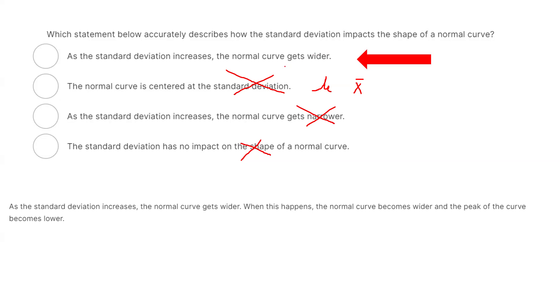As the standard deviation increases, the normal curve gets wider. When this happens, the normal curve becomes wider and the peak of the curve becomes lower.